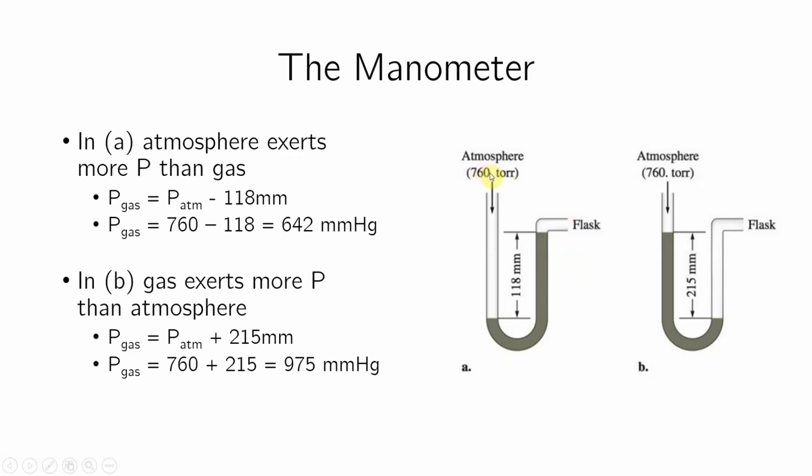So if the atmospheric pressure is larger than the pressure of this gas, that means it will push the liquid more than the gas will. This is A. In B, the gas pushes the liquid more than the atmosphere does, so meaning the gas has more of a pressure than the atmosphere. So if I were to give you a problem, and I'll go over one in a second, where the atmosphere pushes more than the gas, then I will see a rise on this side, on the gas's side.